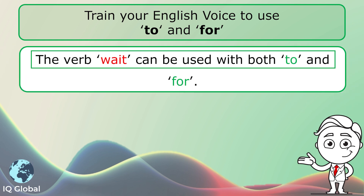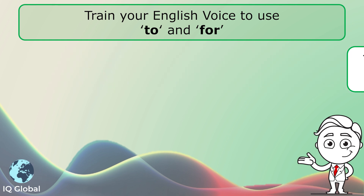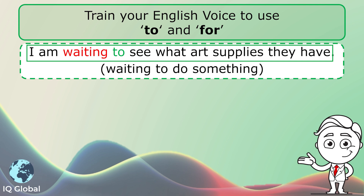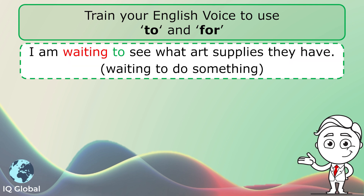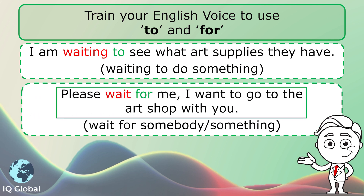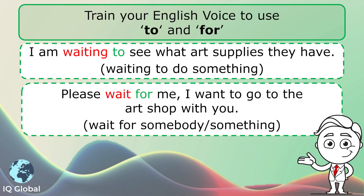The verb 'wait' can be used with both 'to' and 'for'. For example: I am waiting to see what art supplies they have — this means waiting to do something. Or: please wait for me, I want to go to the art shop with you — this means to wait for somebody or something.